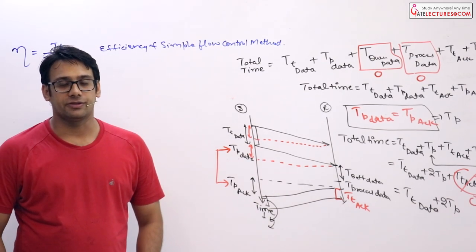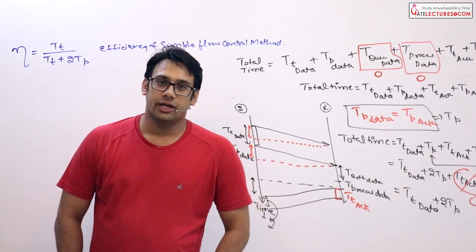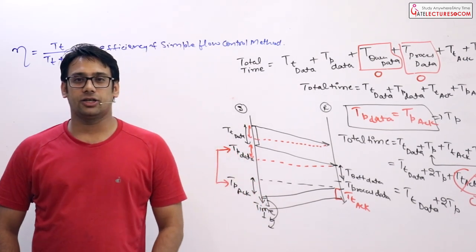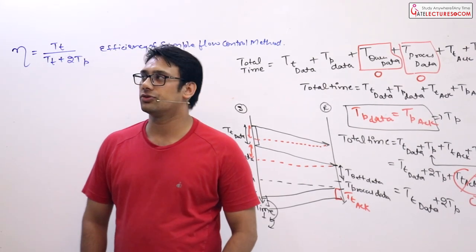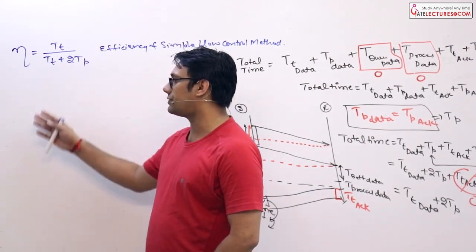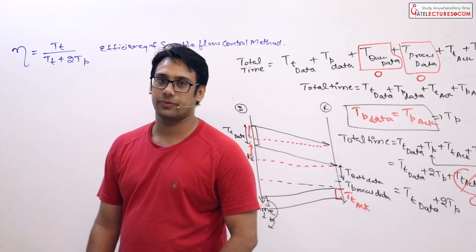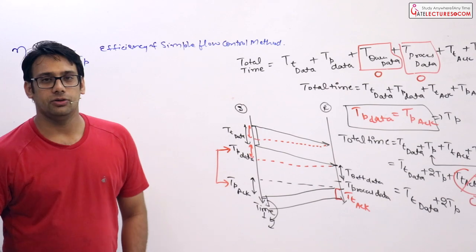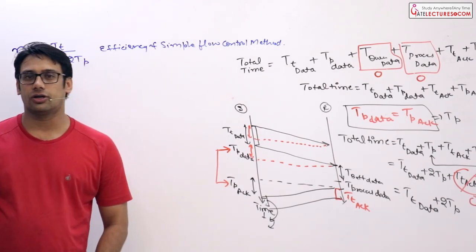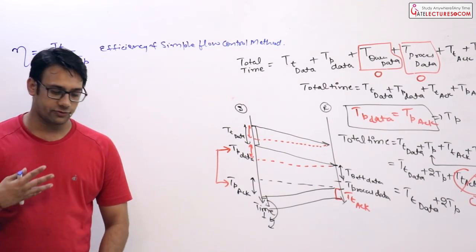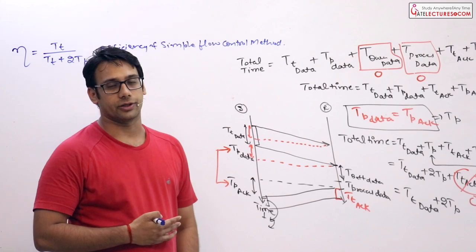In the last video we discussed about simple flow control methods, and at the end of the video I gave you a problem to find what is the efficiency of the simple flow control method. Using this efficiency we can find out a lot of things, and one of those things is the throughput of the network.